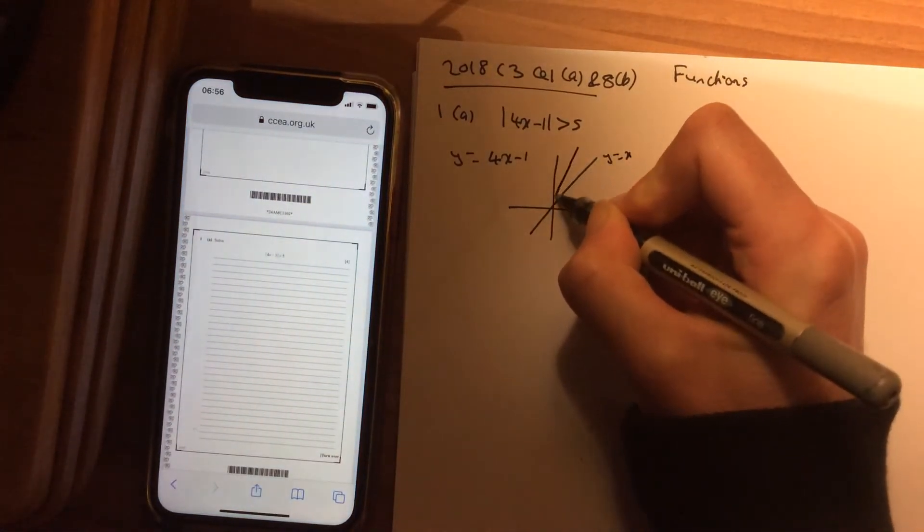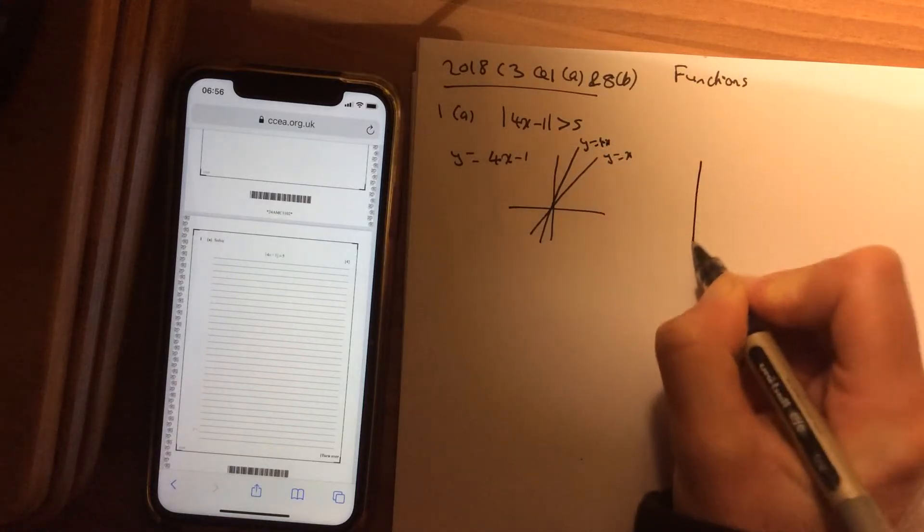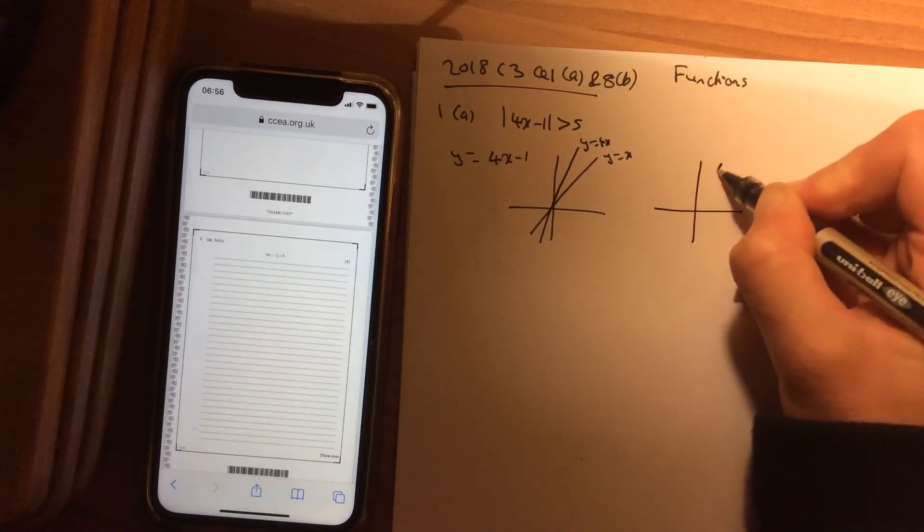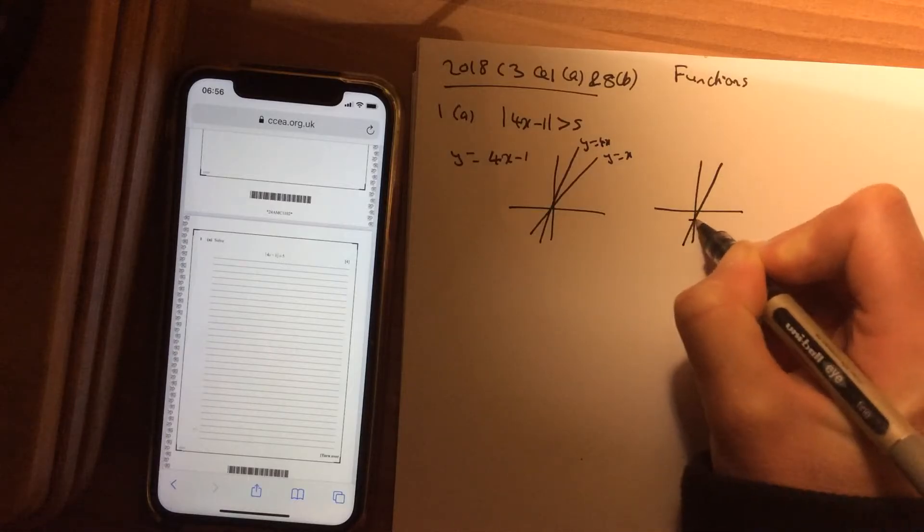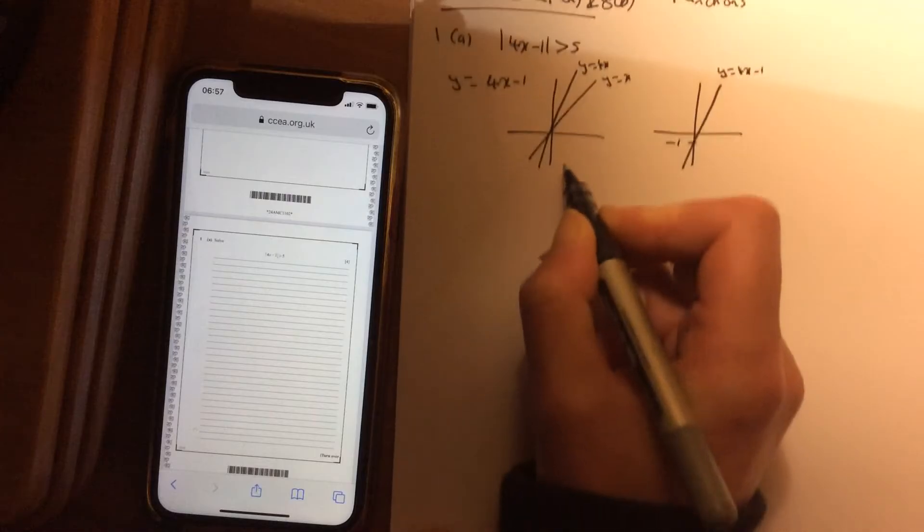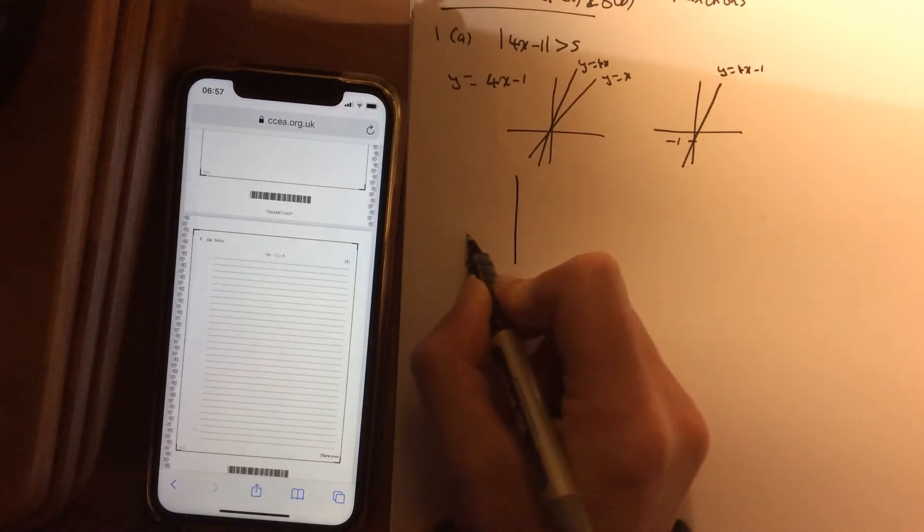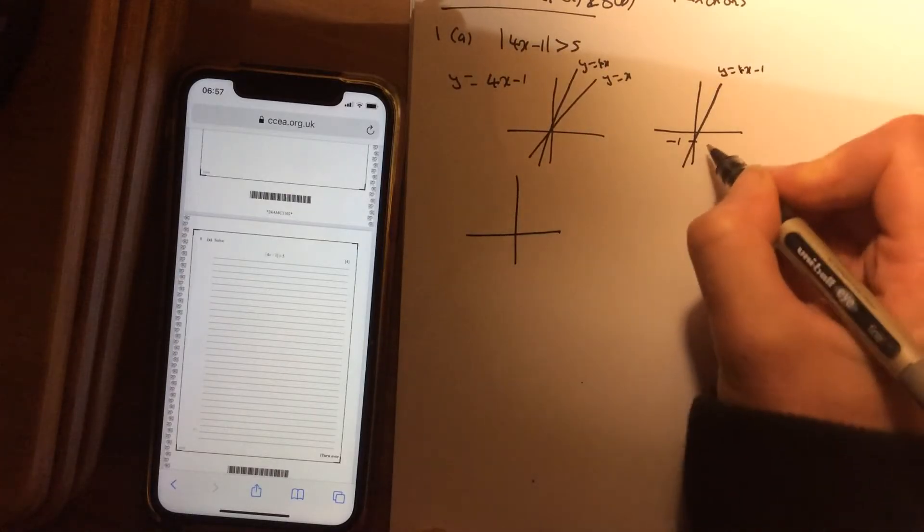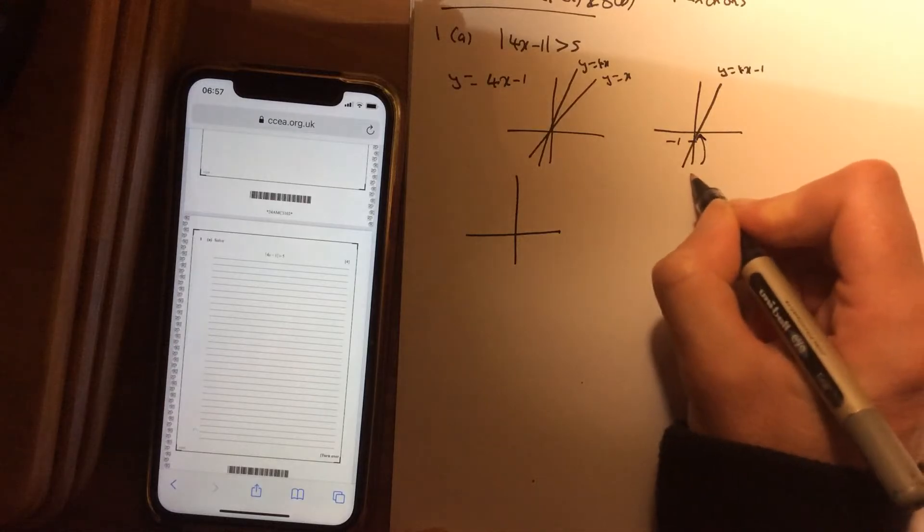So 4x is just much steeper. And minus 1, you just drop it down 1. So minus 1 and y = 4x - 1. I want to modulus the whole graph. So anything that is beneath the axis, I reflect up. I am just going to find this here point.